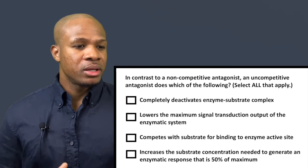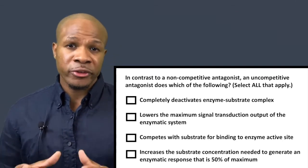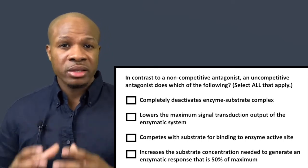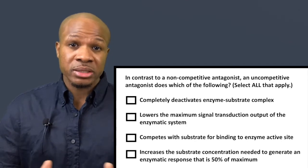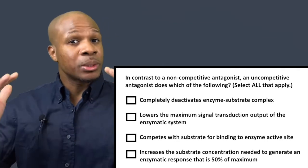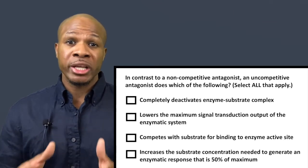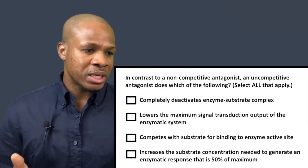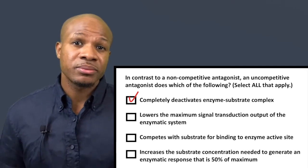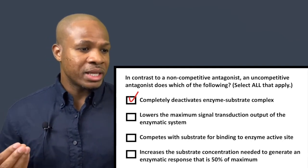Question three says: in contrast to a non-competitive antagonist, an uncompetitive antagonist does which of the following — select all that apply. An uncompetitive antagonist binds and deactivates the enzyme when the enzyme is already bound to its substrate or agonist, and it completely deactivates enzymatic activity, whereas a non-competitive antagonist only suppresses it. Answer choice A says an uncompetitive antagonist completely deactivates the enzyme-substrate complex — yes, that is correct, so answer choice A is a correct answer.